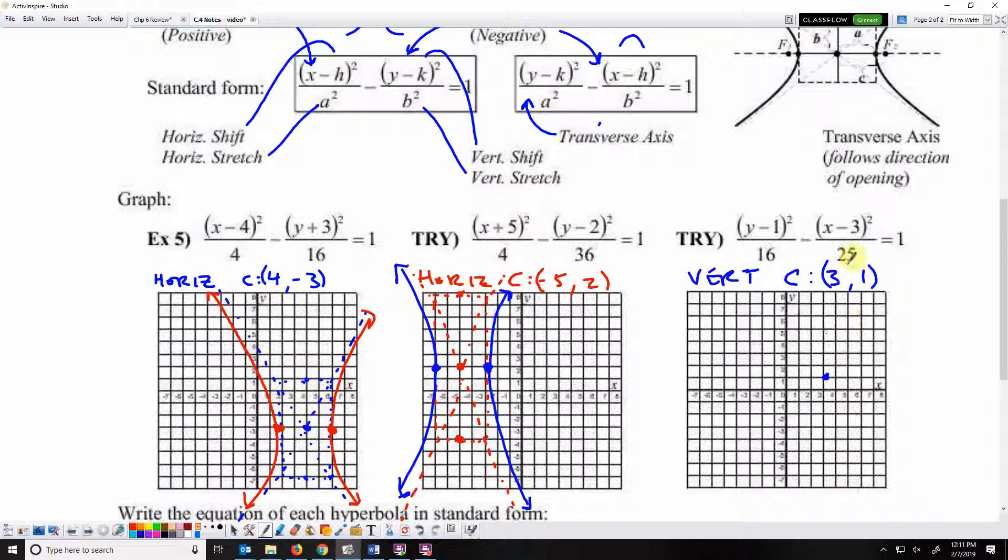Then the horizontal stretch is 5. The vertical stretch is 4. And I can build a rectangle. Then I do diagonals of that rectangle for asymptotes. And since it's vertical, now I'm using the center of the top and bottom as my vertices.